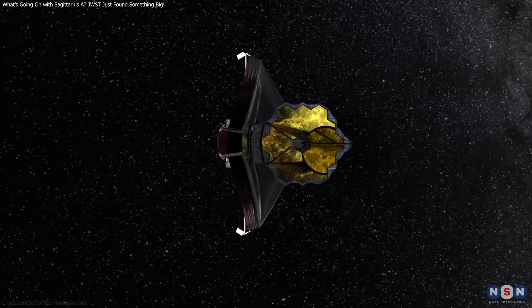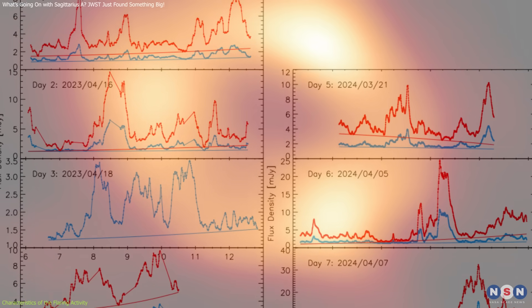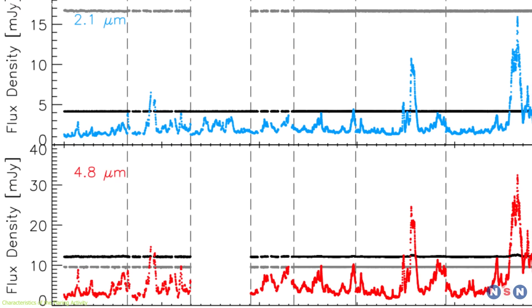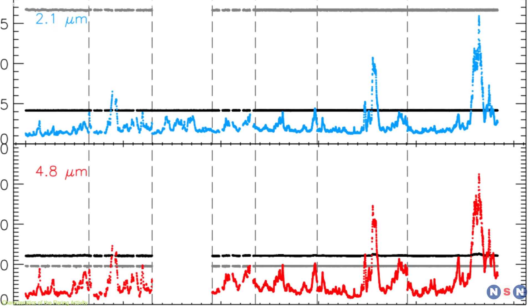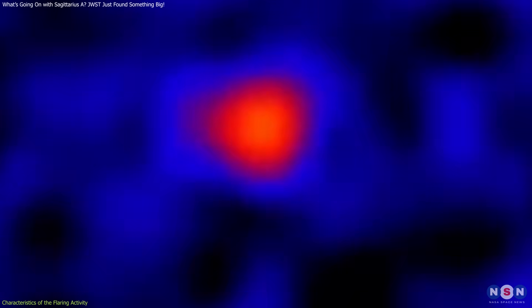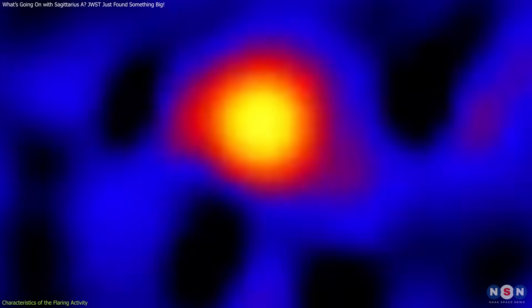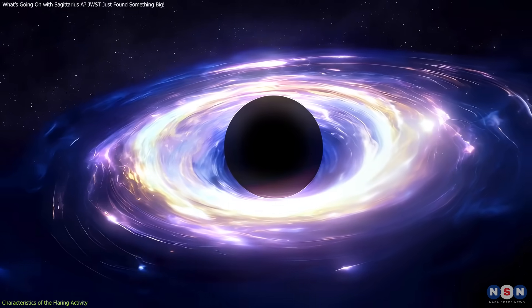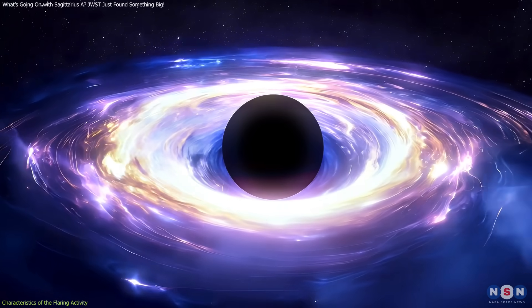The revelations from Webb's observations have painted a vivid and dynamic picture of Sagittarius A-star's behavior, showcasing a level of activity that has both surprised and intrigued the astronomical community. One of the most surprising findings is the frequency and diversity of the flares emanating from this black hole. Contrary to prior assumptions of sporadic activity, the black hole exhibits a persistent stream of flares, with no discernible periods of quiescence.